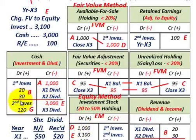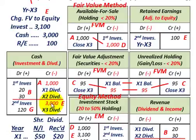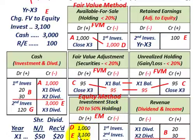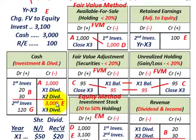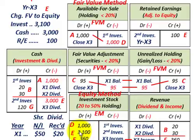For entry E — the second investment — we credit cash for $3 million, and we debit the investment in stock account for $3,100,000. The balancing amount goes to retained earnings, which we credit for $100,000. So the debits and credits balance: credits of $3,100,000 ($3 million cash plus $100,000 retained earnings) equal the debit to the investment in stock account of $3,100,000.